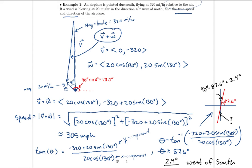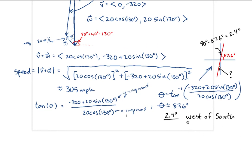As a quick aside, you could also express this heading as 87.6 degrees south of west — starting due west and going south from there. On a test, both answers are acceptable, but on something like WAMAP, they may specify exactly how they want it stated, so follow those directions.